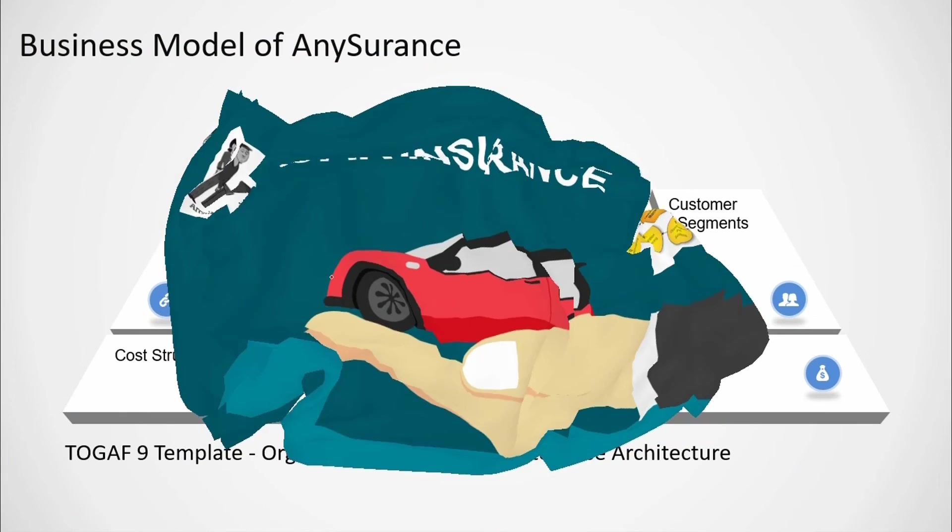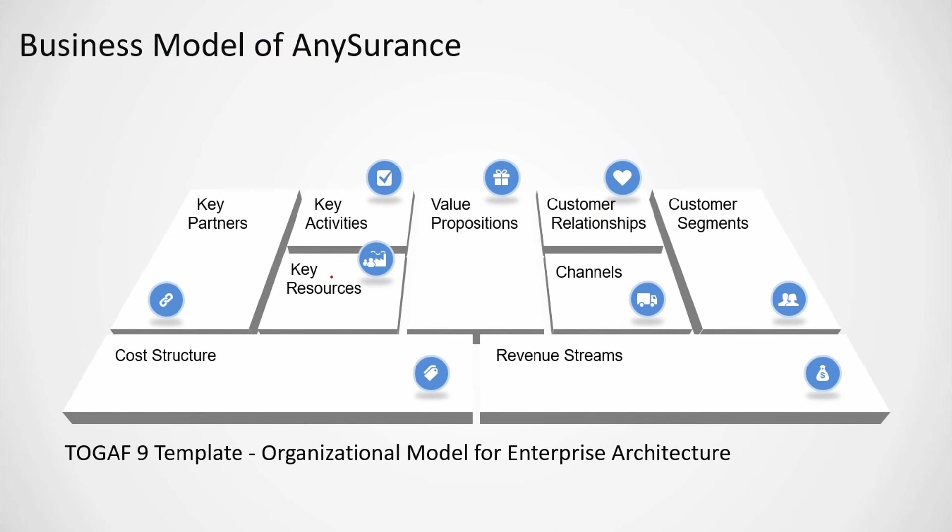Let's go to the next section. In preliminary phase you need to understand the business model of the organization. The business model of Any Insurance looks like this, where they have key partners, key activities, key resources, value propositions, customer relationships, channels, customer segments, cost structure and revenue streams. You can have a look at the TOGAF deliverables section for the organizational model for enterprise architecture document for better understanding.